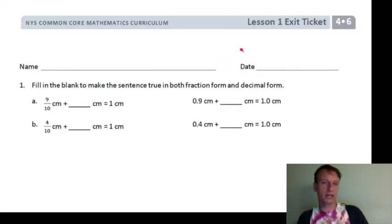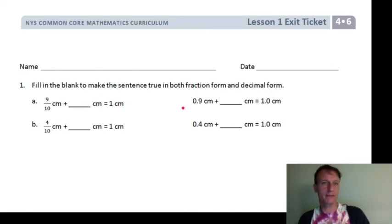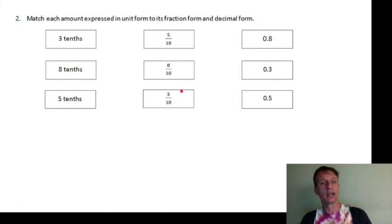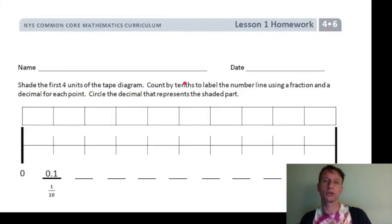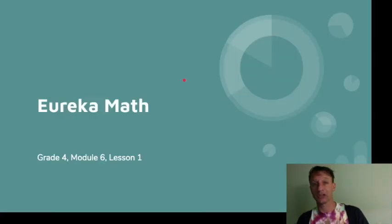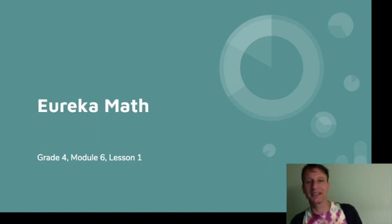Now here's the exit ticket — fill in the blank, same as what we just did. There's also a matching chart with the same types of numbers. Then you get to the homework — and flipping through it quickly, it's actually identical to the problem set. You did it! Go take a break, get a glass of water, go outside, get some sunshine. You've gone and done it again — you completed another Eureka Math lesson!